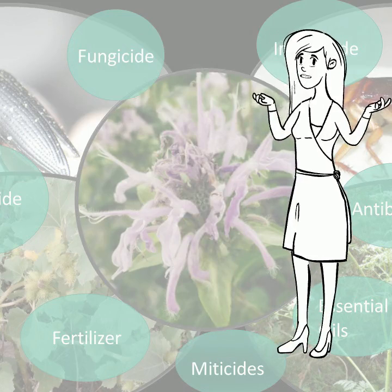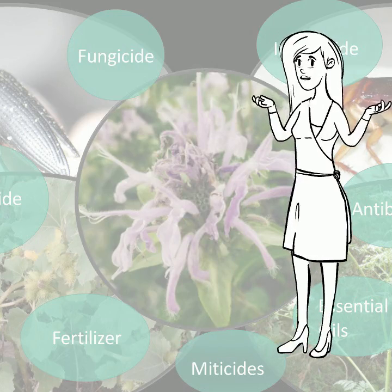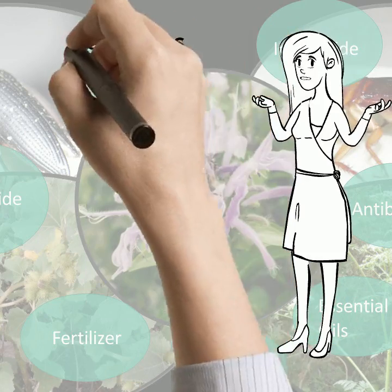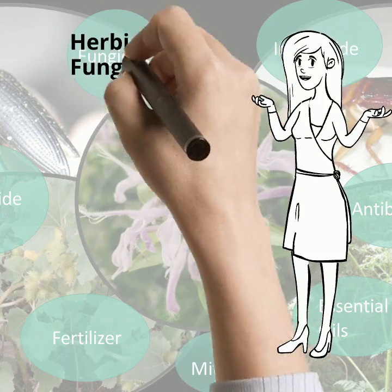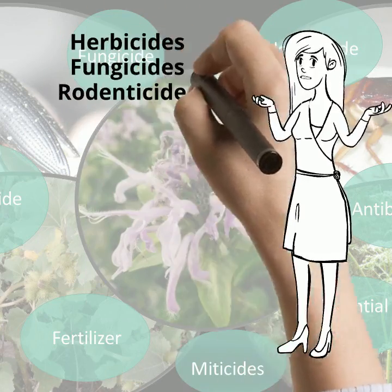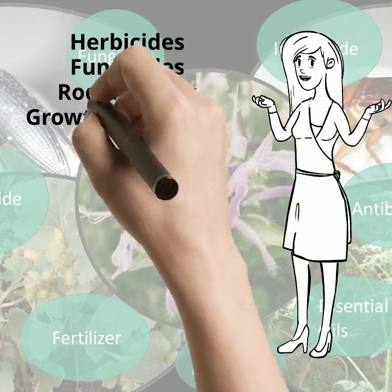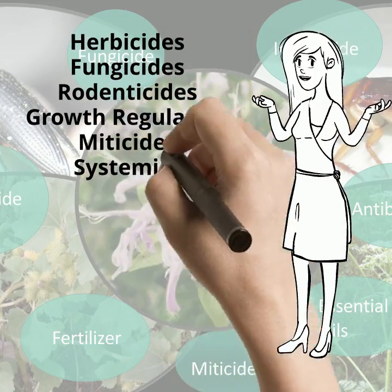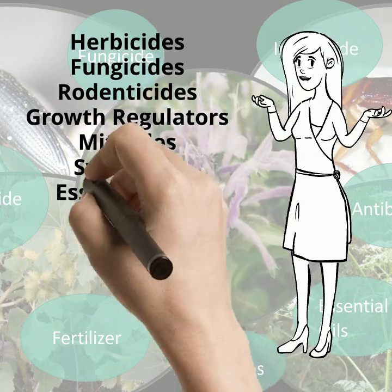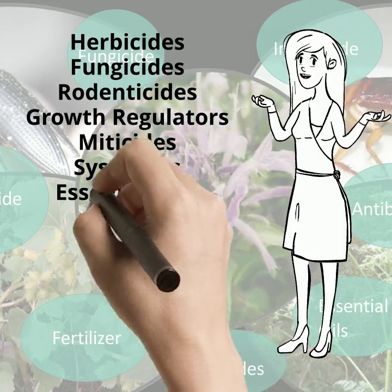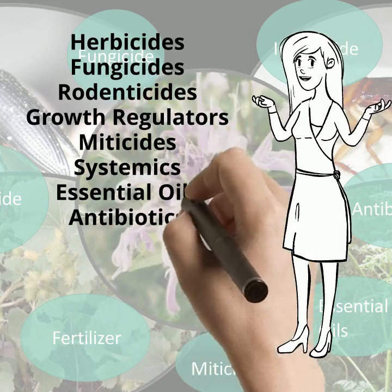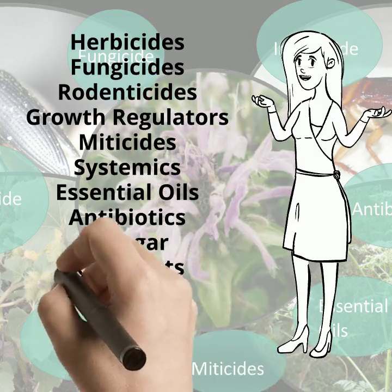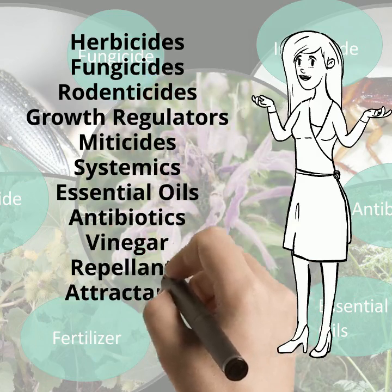There are many different types of pesticides and many different types of pests. It's always important to look at your label and make sure you understand what you're reading. And if you ever run into questions about what it says, you can always reach out to your local pesticide safety education program.